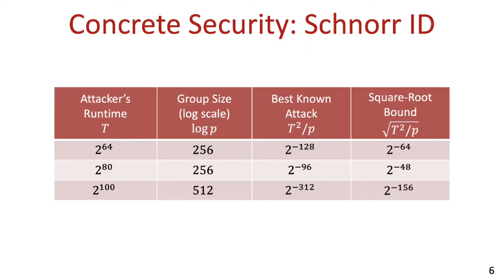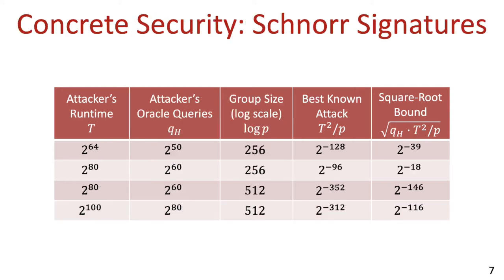These gaps between the provable security of Schnorr's schemes and the best-known attacks against them can be significant. These are just a few examples for different choices of parameters and the concrete gap that they induce between the provable security of Schnorr's ID scheme and the best-known attack against it, and these are a few examples for the concrete gap in the case of Schnorr signatures. Closing the gap between the best possible security of Schnorr ID and signature schemes and the square root bound is not only of theoretical interest but can also have significant practical implications.